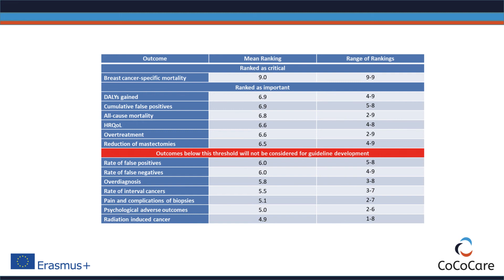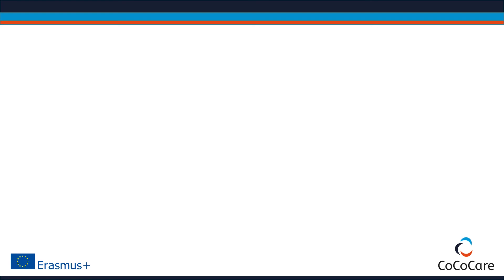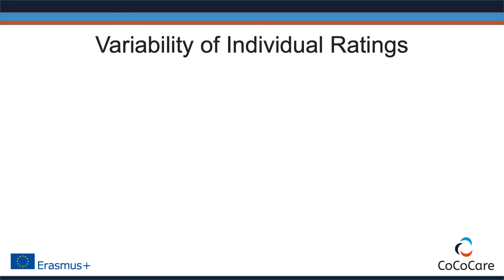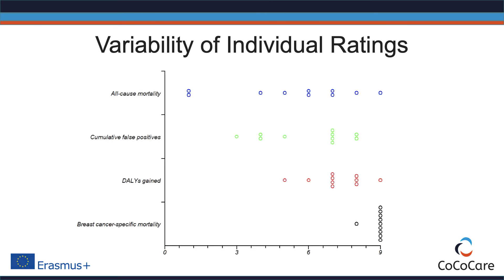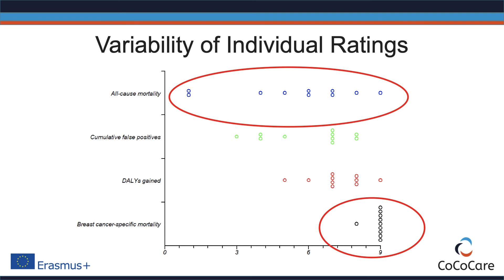There is one additional aspect to consider when rating the importance of outcomes: the variability of answers among those who rate them. For example, in the WHO mammography example, panel members consistently rated breast cancer-specific mortality as a critical outcome. For overall mortality, however, variability was much greater, with answers ranging from 1 to 9. In such a case, discussion with the panel and maybe a second round of rating is necessary.